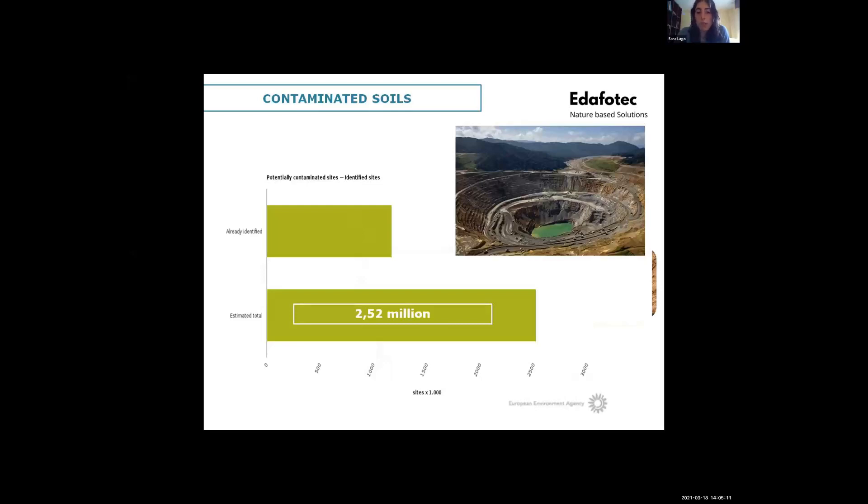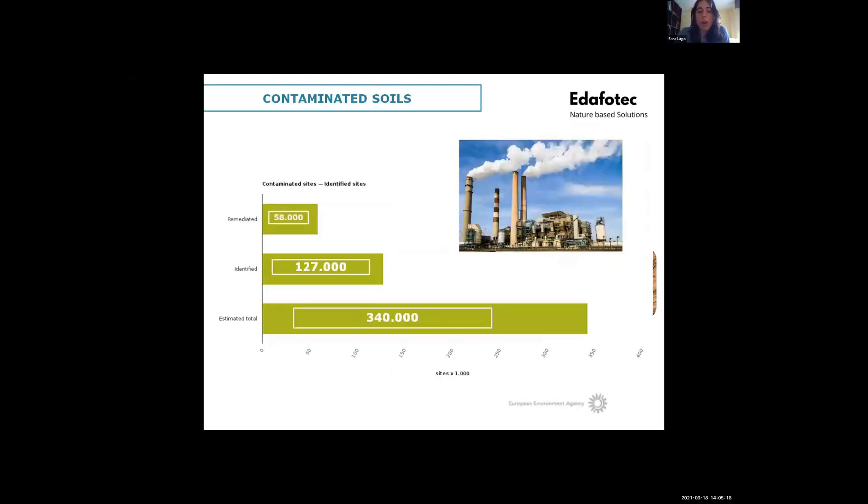According to this agency, 2.5 million sites in Europe are potentially contaminated and from this, 14 percent are estimated to be contaminated. With potential contaminated, this means that there is an activity in the area which potentially causes pollution, but there is not evidence and there are not assessments done until now that can verify this. From these 340,000 estimated contaminated sites, one-third of them have been already identified and only 15 percent of them have been remediated.